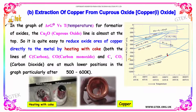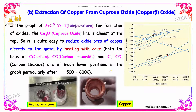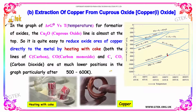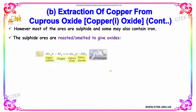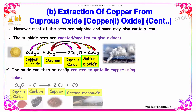This reduction is possible after about 500 to 600 Kelvin. However, most copper ores are sulphides and some also contain iron. The sulphide ores are roasted to give oxides.